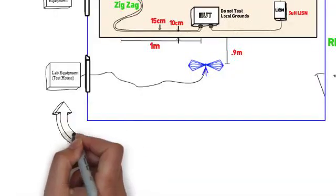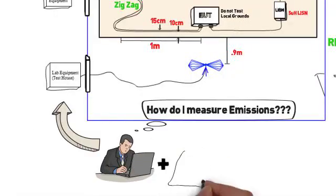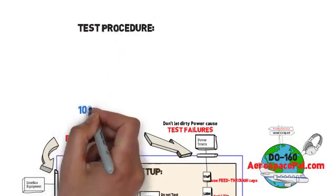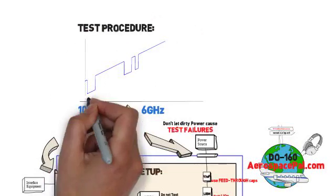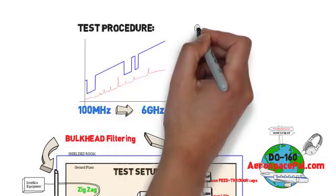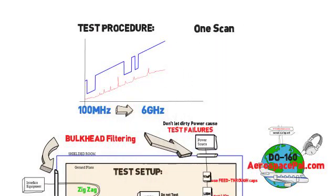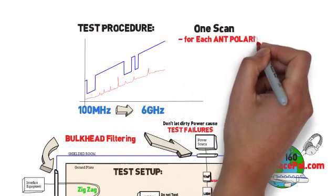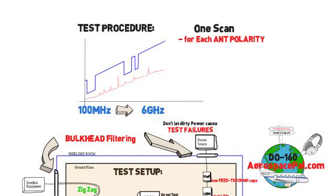Now this test is typically done at a testing house because of the complexity of the test and the cost of the equipment. Once your test setup is complete and you're running your unit in your first operating mode, the test engineer will scan across the 100 megahertz to 6 gig range, stopping on a couple points to change antennas. If you're using the traditional anechoic chamber method, you'll need to test each antenna in two different polarities, vertical and horizontal. This should take less than an hour per scan.